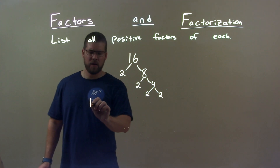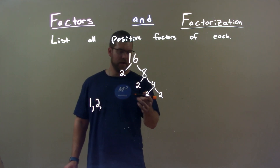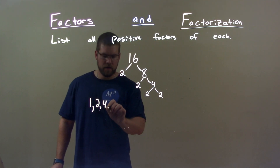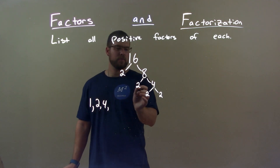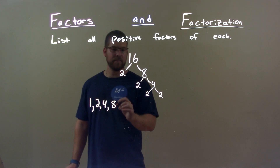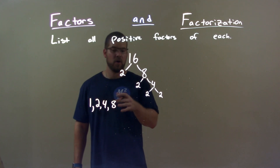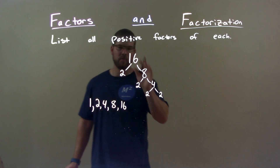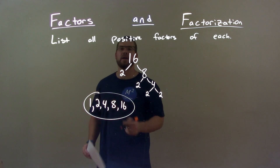1 goes into 16 — we got a 1. 2 is there, we write 2. 3 doesn't go into 16 because we can't multiply any of these numbers here to get 3. 4, we can — 2 times 2 is 4. 5, nothing of these numbers multiplies to 5. 6, no, because 2 times 2 is 4 and 2 is 8. 7, no. 8, yes — we just said it. Now we're halfway. Once we get to halfway of 16 we're done, and we just put the number 16 down, because 1 and the number itself will always be a factor. So our final answer is 1, 2, 4, 8, and 16.